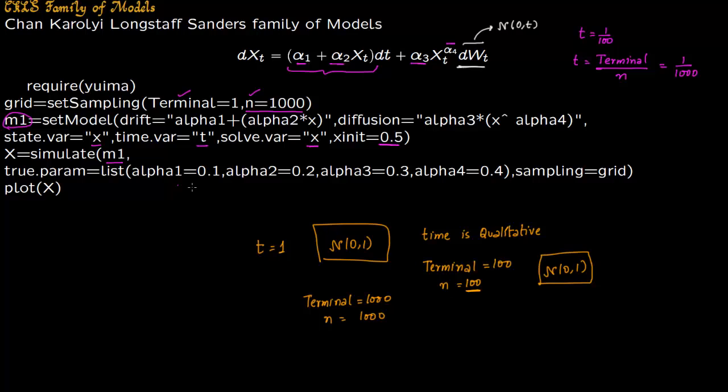And then you have to give your input parameters: alpha one, alpha two, alpha three, alpha four. So alpha one is 0.1, alpha two is 0.2, alpha three is 0.3, alpha four is 0.4. And now I'm putting sampling as grid, because I'm going to sample from this particular grid. I don't want the standard sample. My standard sample would have been terminal is one and n is 100. But I've changed the standard so you have a new grid. And then you can plot this x.